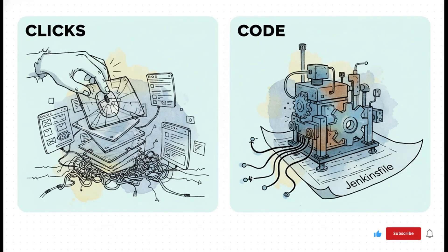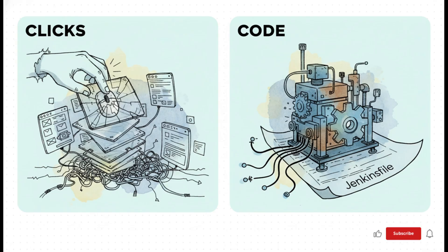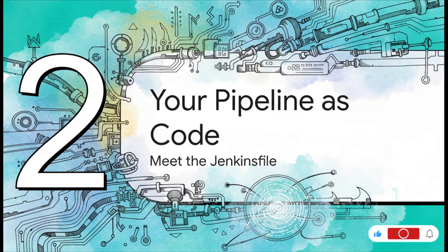This comparison lays it all out. On one side you've got the old way — the UI, all manual clicks, super prone to human error, tracking changes is nearly impossible, and replicating a job exactly is almost impossible. But on the other side — the new way with code — your entire pipeline is defined in a single text file. You can check it into Git right alongside your application code. It's version controlled, you can see every single change, it's easily reviewable in a pull request, and you can reuse and share pipelines like it's nothing. You're no longer just clicking buttons — you're writing software that builds your software.